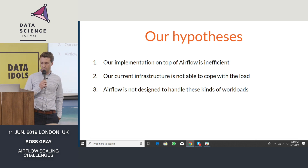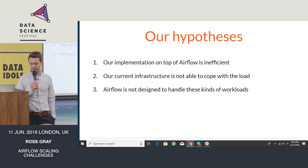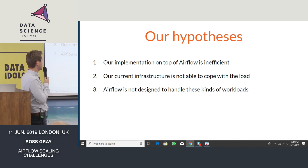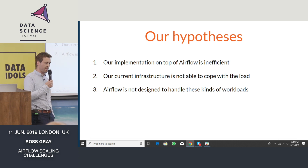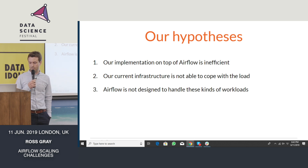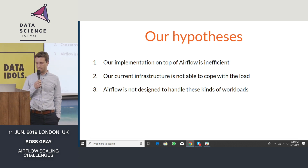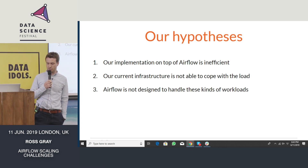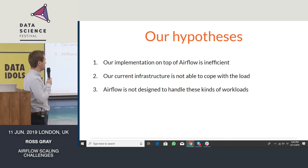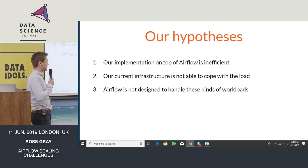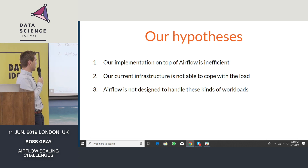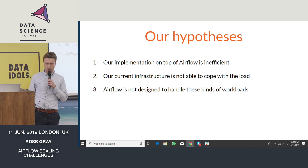We had a few different hypotheses for why we were seeing such issues in production. Our first hypothesis was that our implementation on top of Airflow is inefficient. We knew that lots of big companies are using Airflow at scale, so we thought perhaps it's just the way we're using Airflow that's not optimised. Secondly, we wanted to test the hypothesis that our infrastructure is a bottleneck. And finally, it's important to answer whether Airflow is designed to handle the kind of workloads we're running here.